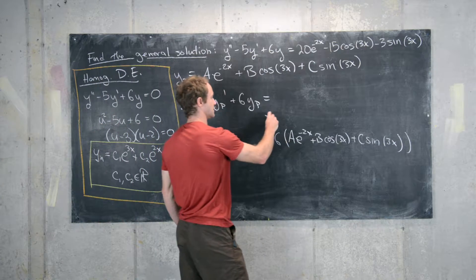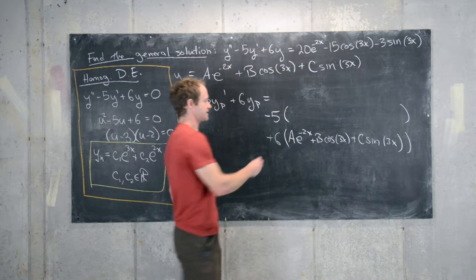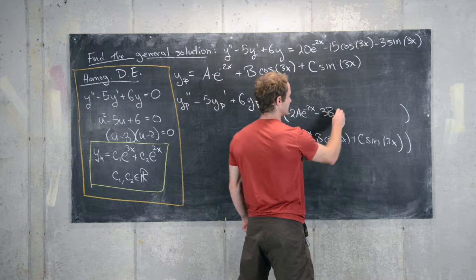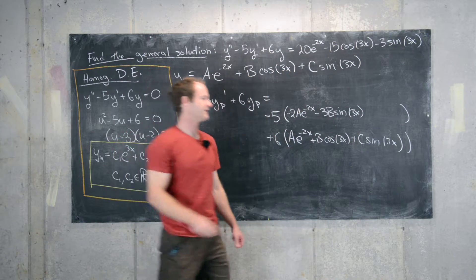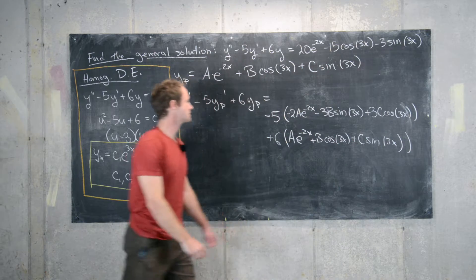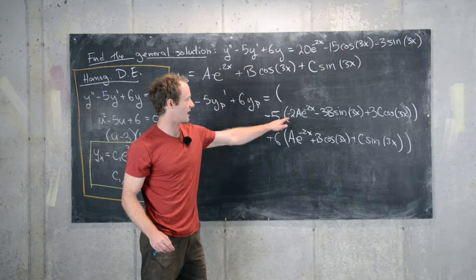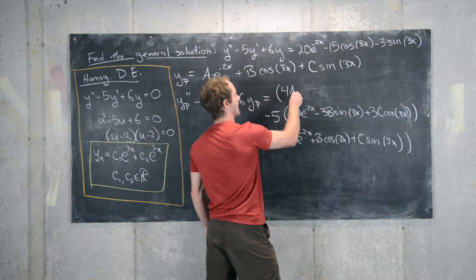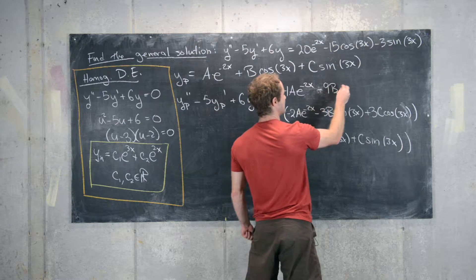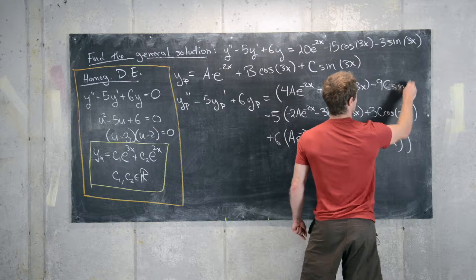Now we need minus 5 times the derivative of yp. Taking the derivative, we get minus 2a e to the minus 2x using the chain rule, then minus 3b sine of 3x, and finally plus 3c cosine 3x. For the yp double prime term, we take the derivative again to get 4a e to the minus 2x, minus 9b cosine 3x, and minus 9c sine 3x.